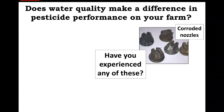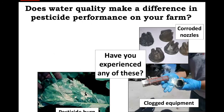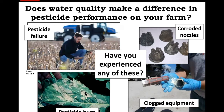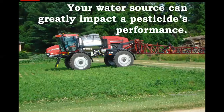Does water quality make a difference in pesticide performance on your farm? Have you experienced any of these issues: corroded nozzles, clogged equipment, pesticide burn, or pesticide failure? Water is one of nature's most remarkable liquids, capable of dissolving or suspending minerals and organic matter. It's one of the reasons why pesticide sprays mainly use water as a liquid carrier. Water quality influences how active ingredients perform, and if the source of water we use for making pesticide is problematic and of poor quality, it can lead to clogged filters and nozzle tips, unexpected damage on our crop plants, and even pesticide failure.